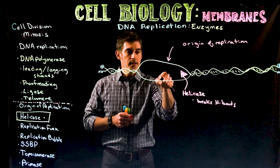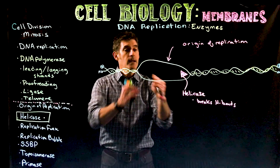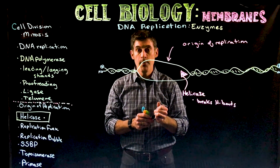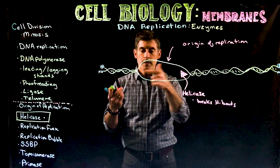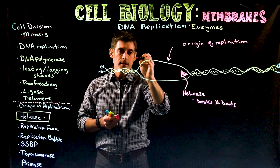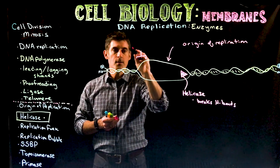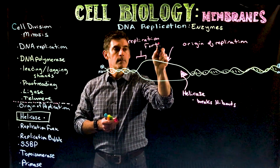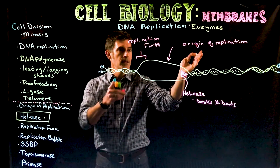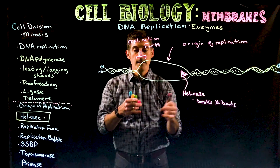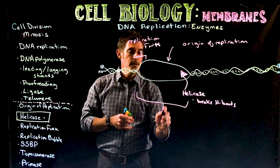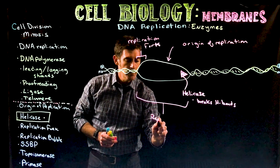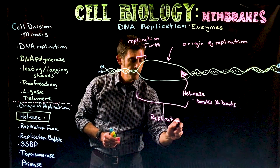At this origin of replication, where the strands are pulled apart, the two single strands are being separated — but in opposite directions. The single area where the two strands are pulled apart is called a replication fork. At a single origin of replication you have two forks, one on each side. The area where there's no hydrogen bonding is called a replication bubble.